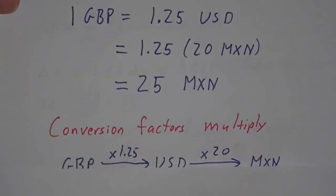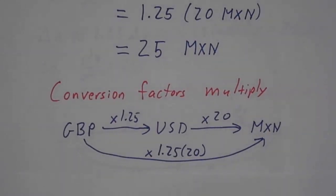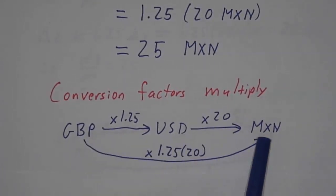The conversion factors multiply. If you multiply by 1.25 to go from pounds to dollars, and from 20 to go from dollars to pesos, then you multiply by 1.25 times 20 to go directly from pounds to pesos.